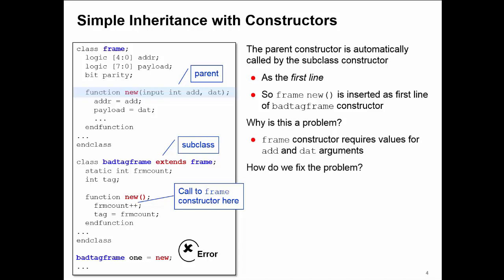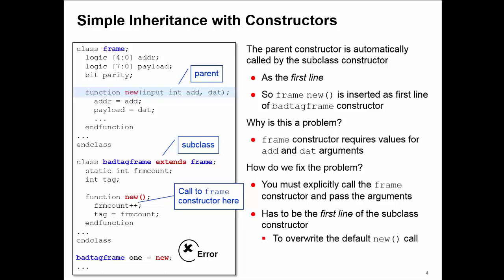So how do I fix this? What I need to do is insert an explicit call to the frame constructor which will allow me to pass the values for add and dat arguments. I must insert this as the first line of the BadTagFrame subclass constructor in order to overwrite the default new call. My problem though is how can I access the constructor of the parent from inside the subclass?